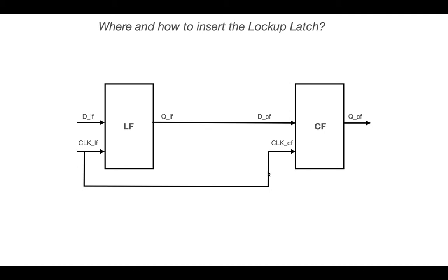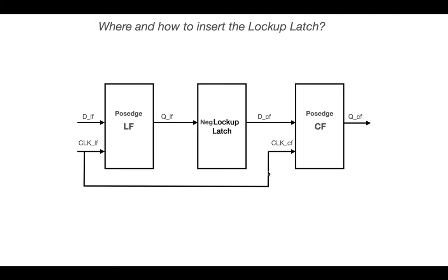A lockup latch is added between the launch flop and the capture flop. If the launch flop and the capture flop are operating at the positive edge of the same clock, then a negative level-trigger lockup latch has to be added. If they are operating at the negative edge of the same clock, then a positive level-trigger lockup latch needs to be added. The launch flop's clock has to be fed to the negative lockup latch, so that the skew between the launch flop's clock and the negative lockup latch is negligible.